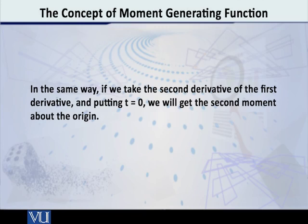If you take another derivative — that is the second derivative — and put t equal to 0 in that expression, then what you get is the second moment about 0, the second moment about the origin. This is why this particular function is called the moment generating function.